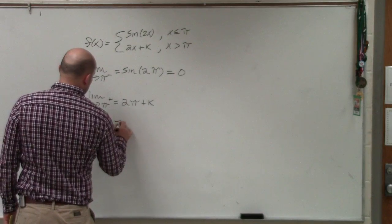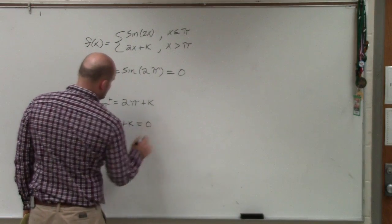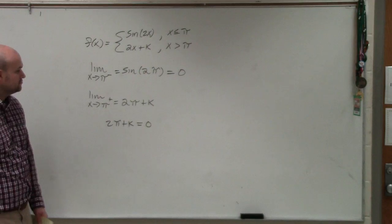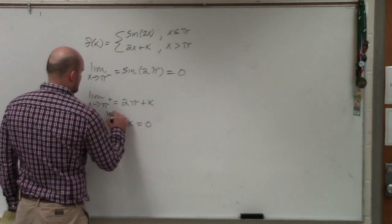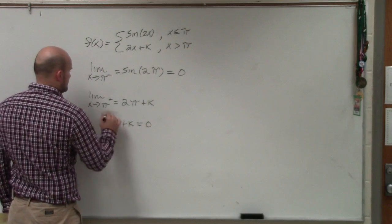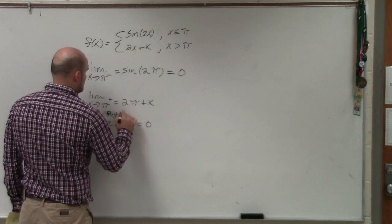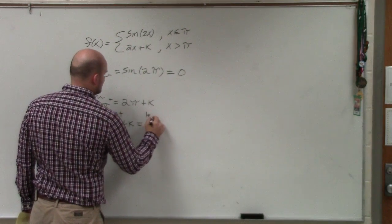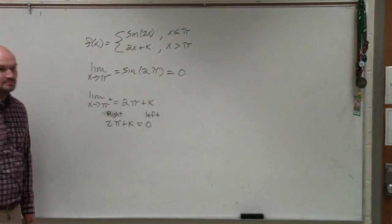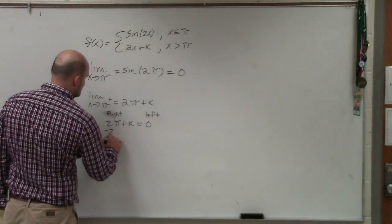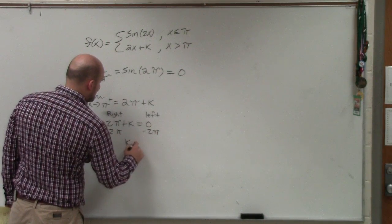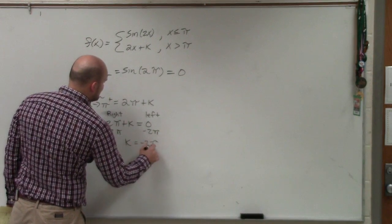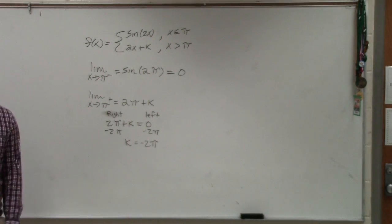So all you do is set up an equation: 2π plus k is equal to 0. Now we just need to solve for k. The right hand has to equal the left hand limit, so I subtract 2π. Therefore, when k is equal to negative 2π, this function is continuous.